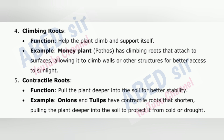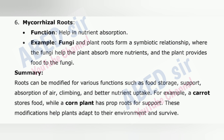5. Contractile roots — function: pull the plant deeper into the soil for better stability. Example: onions and tulips have contractile roots that shorten, pulling the plant deeper into the soil to protect it from cold or drought. 6. Mycorrhizal roots — function: help in nutrient absorption. Example: fungi and plant roots form a symbiotic relationship where the fungi help the plant absorb more nutrients, and the plant provides food to the fungi. Summary: roots can be modified for various functions such as food storage, support, air absorption, climbing, and better nutrient uptake. These modifications help plants adapt to their environment.